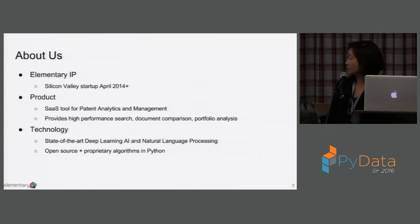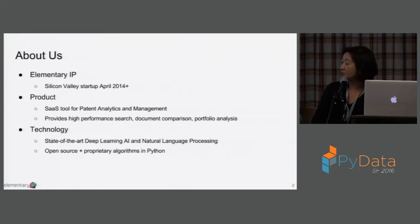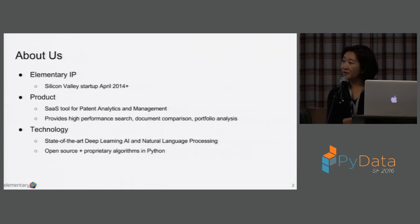We provide high-performance searching, document comparison, side-by-side comparison, looking for similarities between documents, and we also do portfolio analysis. The technology we use is deep learning and natural language processing. We heavily use open source and we also have our own proprietary algorithm in Python. The reason why we are here today is that we owe a lot to the Python and open source community — we are here just to share our experience and our learning.